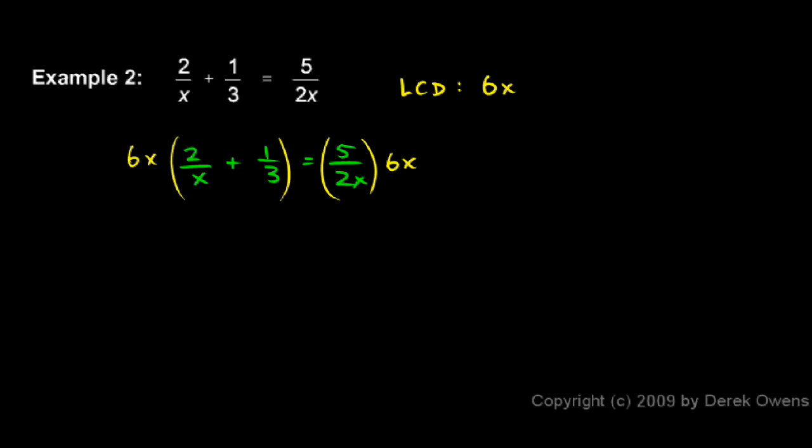And now we multiply. 6x multiplied by 2 over x. Well, when we do that, you're going to see this x will cancel, and we're left with 6 times 2, which is 12.